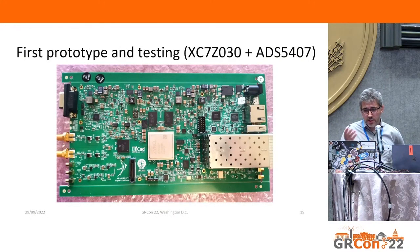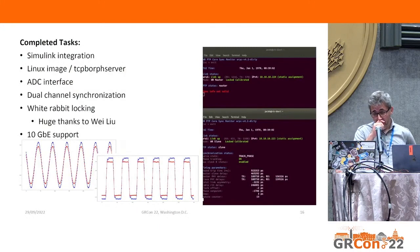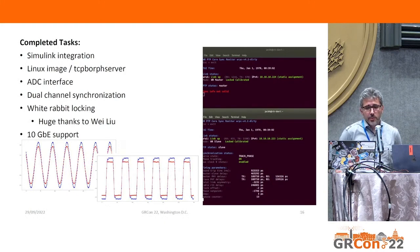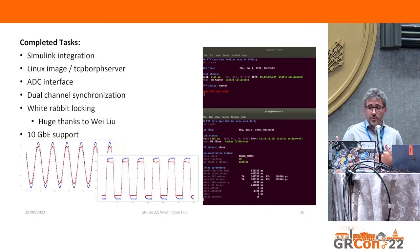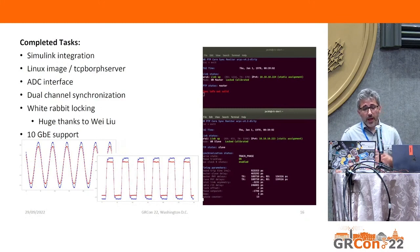The first prototype was produced shortly after the design, and it looks quite similar to the CAD drawing. I then passed things over to Jack, who did a lot of good work — Simulink integration, yellow blocks for the ADC and 10 gig, a Linux image, and a TCP corr server. The ADC interface and channel synchronization have been tested quite well, and there's White Rabbit locking — those black screens you see are tests showing the White Rabbit system is working — plus 10 gig support.